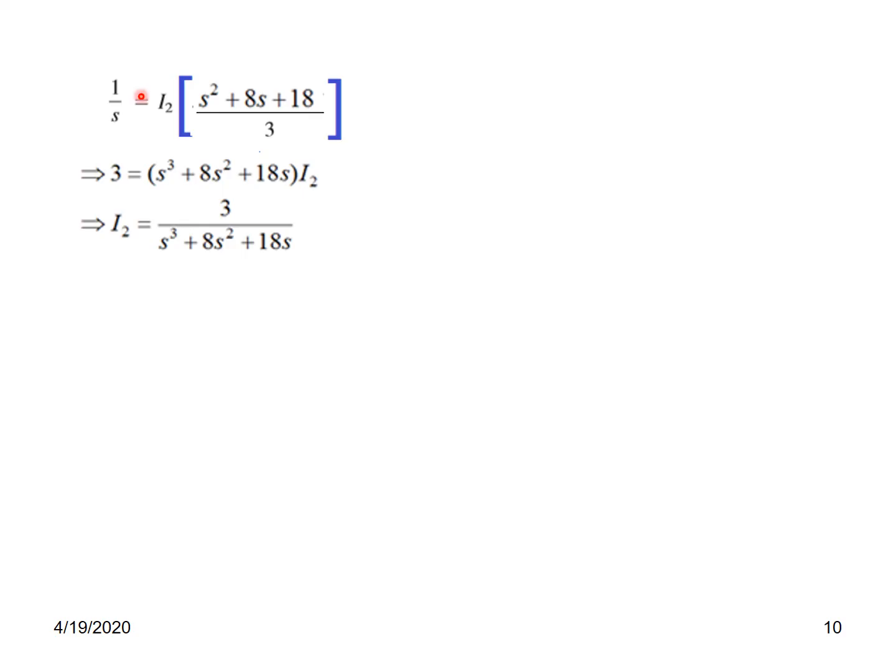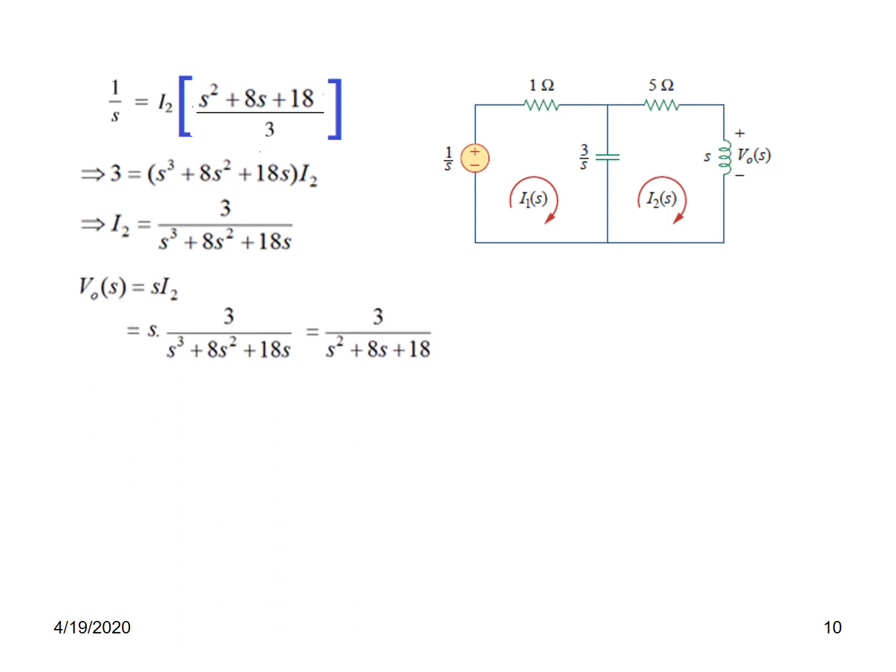From here we can find I2 to be 3s divided by s cubed plus 8s squared plus 18s. Now we need to find the voltage V(s). Once we have known I2 we just need to multiply by s to get V0(s). So V0(s) is s times I2. s times I2 simplified, we come across this. Now we need to go for partial fraction.